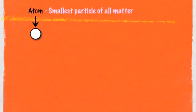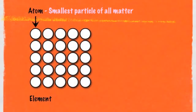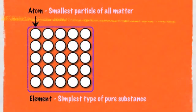So how is the atom related to elements? That white circle there represents an atom, and if that's an atom, then this is an element. One way in which we can define an element is that it's the simplest type of pure substance. A pure substance is something that only contains one type of particle, and you can see from the picture that all of the atoms in the element are the same.